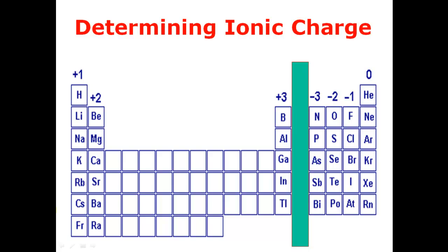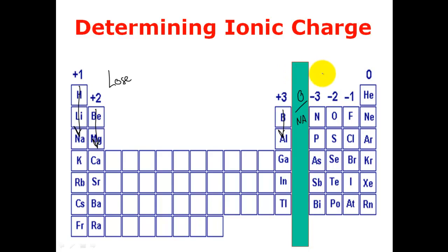Before we begin, I just want to take a quick look at the valence charges on ionic compounds. We need to recognize the valence charges on our individual atoms and ions. Everything in group 1 becomes a plus 1 ion, group 2 a 2-plus, then a 3-plus charge. We have a 3-minus charge, a 2-minus charge, and a 1-minus charge. Elements on the left side will lose their outer shell electrons, and elements on the right will gain their outer shell electrons.